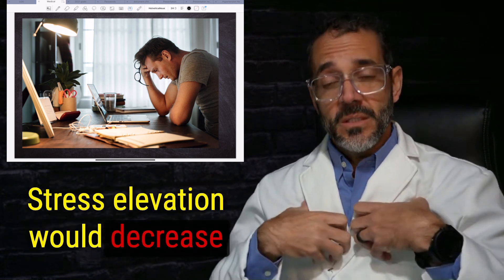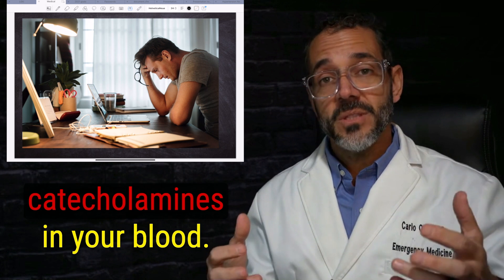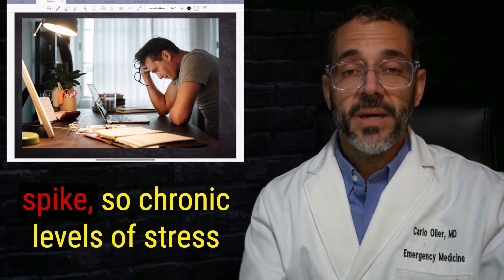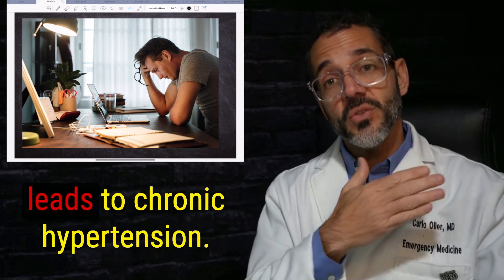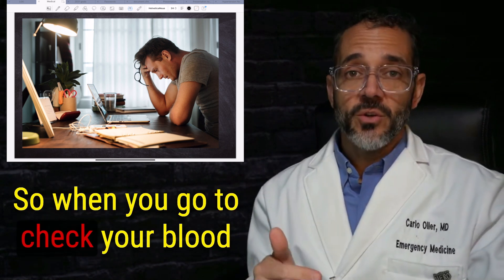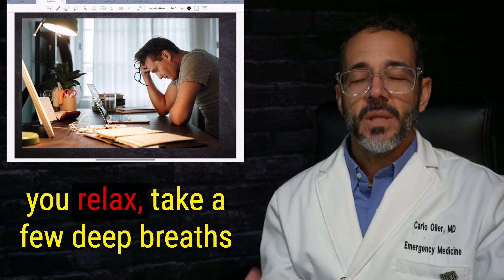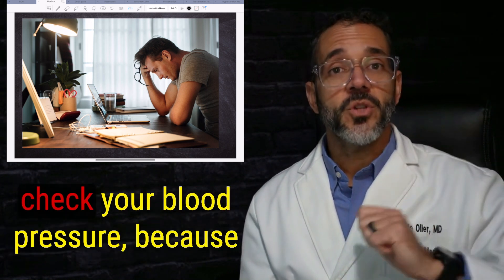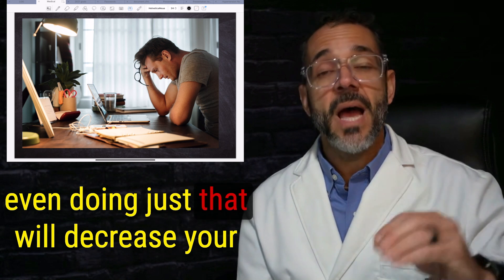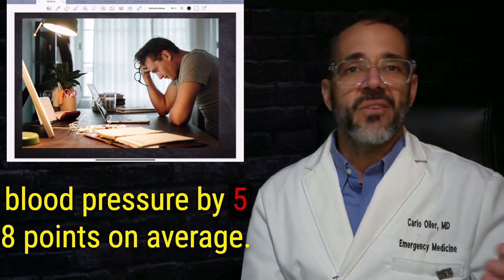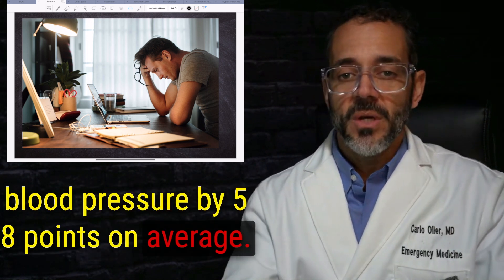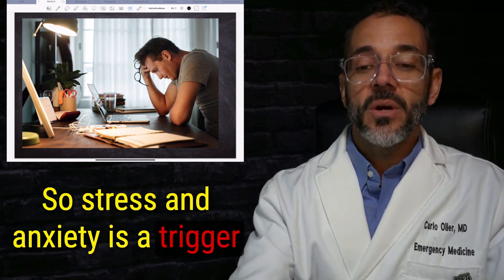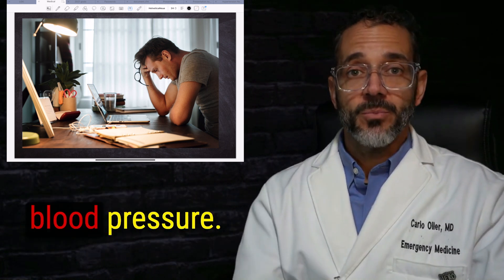Stress elevation would increase the amount of catecholamines in your blood and your blood pressure will spike. So chronic levels of stress is chronic hypertension. When you go to check your blood pressure, make sure you sit down, you relax, take a few deep breaths for about 20, 30 seconds before you check your blood pressure. Cause even doing just that will decrease your blood pressure by five to eight points on average. So stress and anxiety is a trigger and something that will spike your blood pressure.